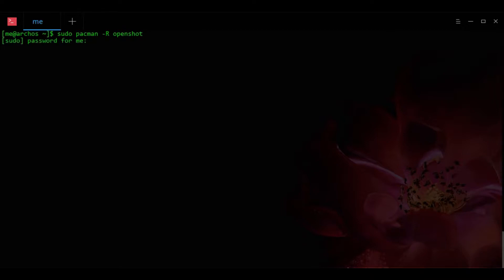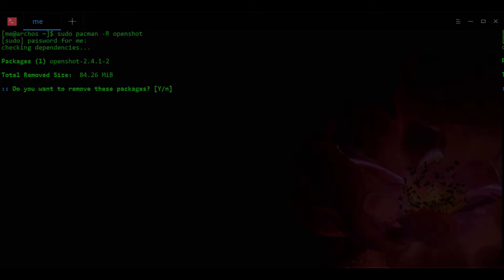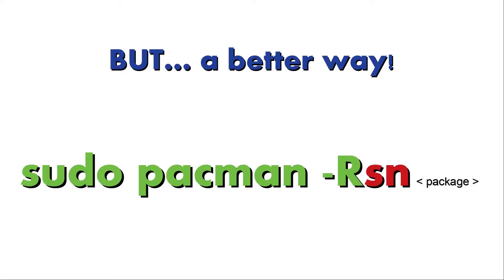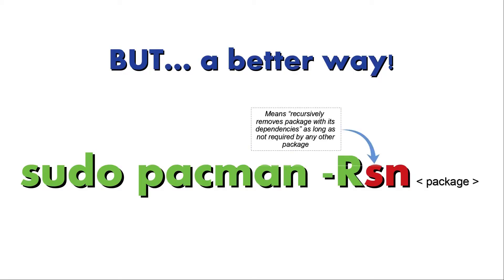The -R operation alone removes the main package files without touching any of the dependencies installed by the package. These leftover dependencies become orphaned if not used by any other package. To remove the package with all its dependencies, use sudo pacman -Rsn.